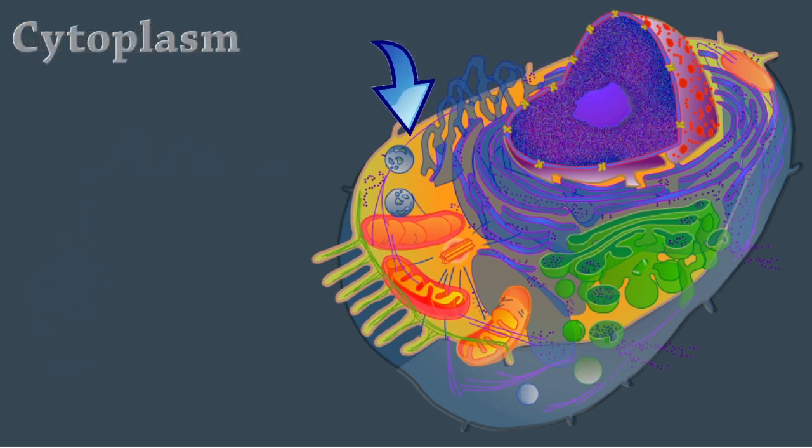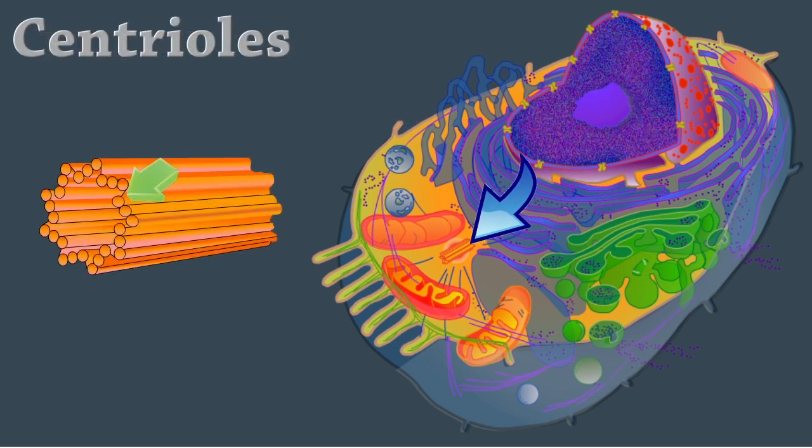In addition to organelles, the cytoplasm also contains other cellular structures. Centrioles are paired cylindrical bodies. Each one is composed of nine triplets of microtubules. They organize a microtubule network during mitosis to form the spindle, asters, and basis of cilia and flagella.